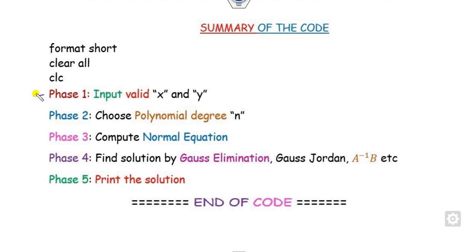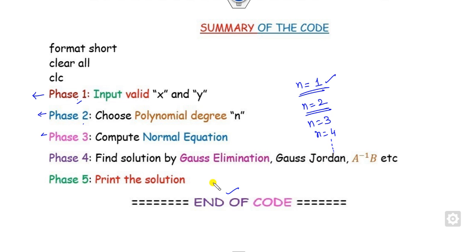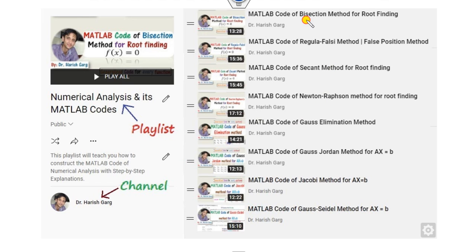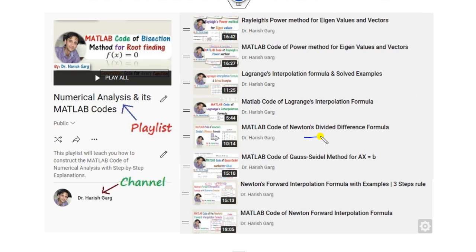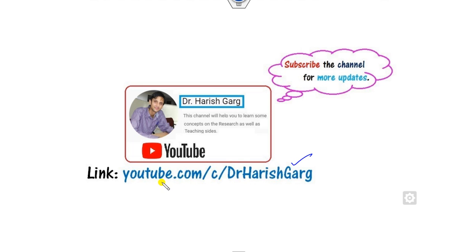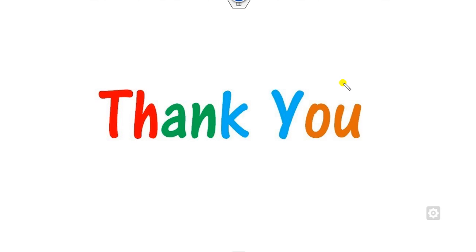That is the summary of this code. Whatever I have explained in phases 1 through 5, you can write the code one by one. If you put N as 1 it will fit a straight line; if N is 2 it fits a quadratic equation; N is 3 or 4 depending on your choice. You can find the optimal solution using any of the three methods. For more MATLAB programming videos — Gauss-Seidel, Gauss-Jordan, Simpson one-third, Newton forward, Euler methods — follow the link. Best of luck students, happy learning.